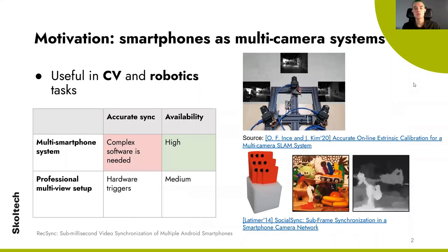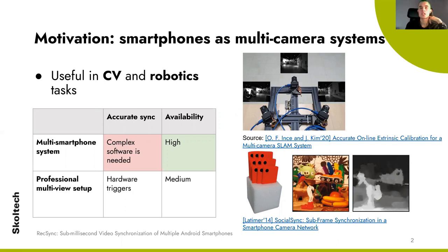The central motivation for this work is to use smartphones as multi-camera systems, which can be applied in computer vision and robotics tasks, particularly in 3D reconstruction and SLAM. Multiview tends to show more accurate and robust results in such tasks and allows for a wider range of applications compared to monocular cameras.